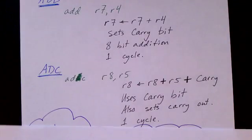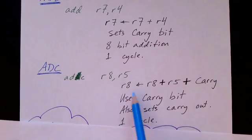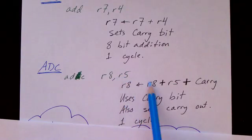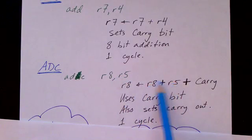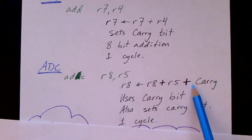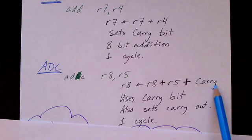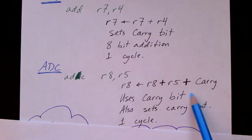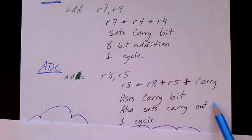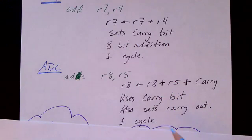Next let's take a look at the add with carry instruction, ADC. In this example, register 8 and register 5 are being added together with the result going into register 8, but in addition the carry bit — either a 0 or 1 — is also added. So it uses the carry bit as well as setting the carry bit based on what carries out of the most significant bit. This too can be done in a single cycle.